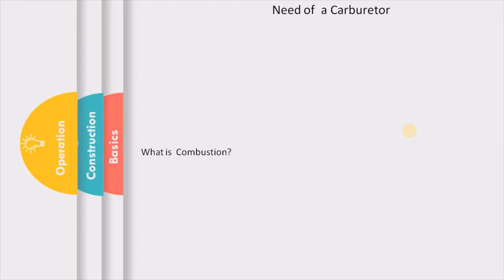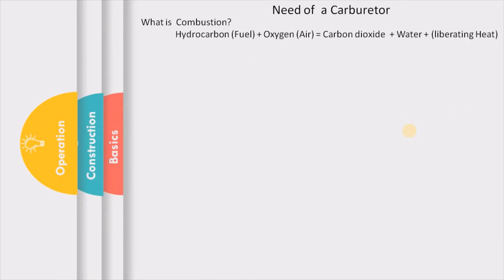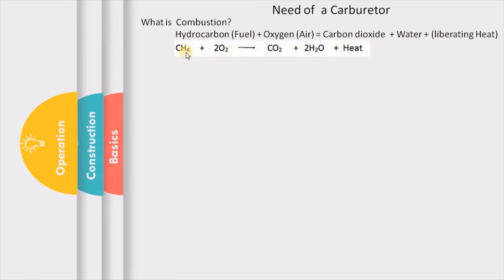In SI engines, initially a spark is produced and the mixture is ignited. For that, let us understand what a combustion process is. A hydrocarbon fuel — having hydrogen and carbon — is mixed with air, and this process of oxidation is what we call combustion. It produces carbon dioxide and water, and along with this it liberates heat. This is where the chemical energy in the fuel is converted into heat energy.